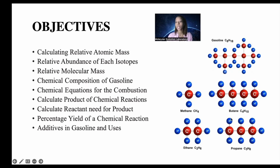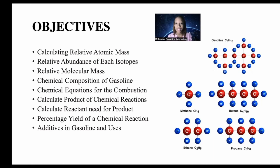Calculating the product of a chemical reaction is very important, especially when you want to understand the percentage yield of a chemical reaction. It will also assist in calculating the reactants needed for the product, and give a quantitative value of the reactants needed to produce a product. Gasoline additives can be alcohols such as methanol and ethanol, or ethers such as methyl tert-butyl ether (MTBE), tert-amyl methyl ether (TAME).